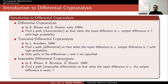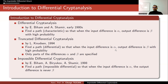Impossible differential cryptanalysis is different from these two techniques. In this scenario, the aim is again to find a path — called an impossible differential — so that when the input difference is alpha, the output difference beta is never observed. So instead of high probability, we have zero probability.